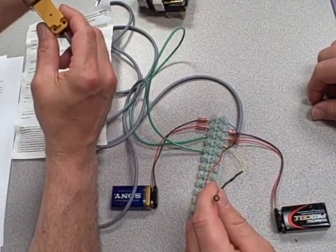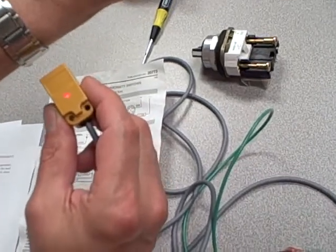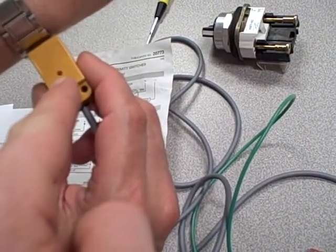We're looking at another battery-powered proximity switch. In this case it's a normally closed switch. So here as Kevin holds his watch band close to the switch, the light goes off.